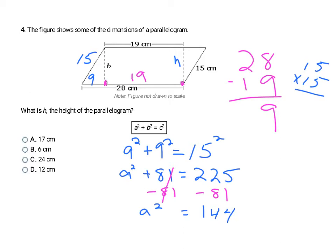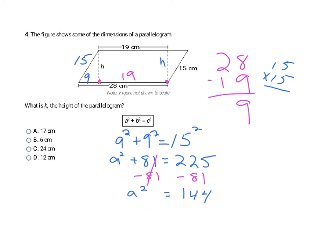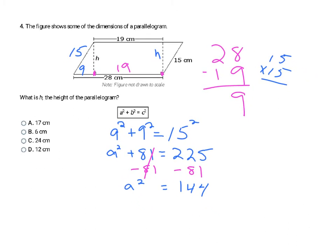If you don't recognize what perfect square gives 144, you check your answers: 17 times 17 doesn't give 144, 6 times 6 is 36, 24 times 24 is way bigger. But 12 times 12 is 144. So that's going to make D my final answer.